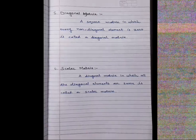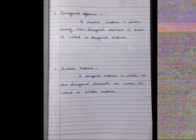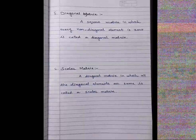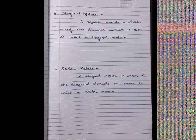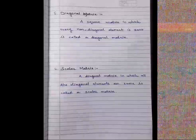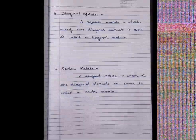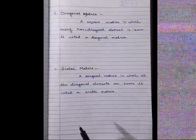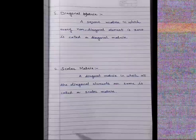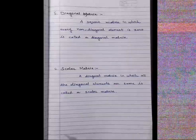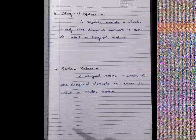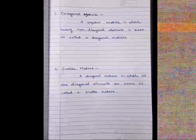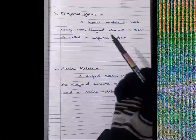Hello students. In the last lecture we started matrices and completed a few types. Today we will continue with types of matrices. In the last lecture we covered four types: row matrix, column matrix, zero matrix, and square matrix. Now we will continue with type number five: diagonal matrix.